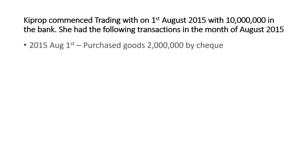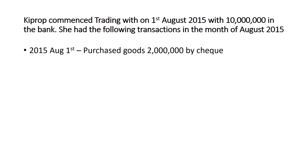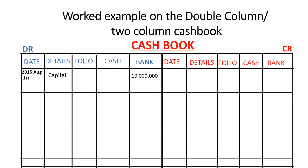On the same day, 1st August, goods worth 2 million shillings were purchased by check. When we use a check to purchase goods, it means we are using money in the bank. So the money in the bank reduced by 2 million shillings, and we credit the bank account — putting 2 million in the bank column on the credit side. The other item affected is purchases.